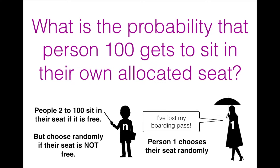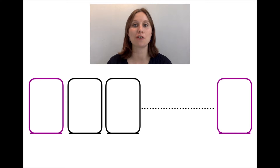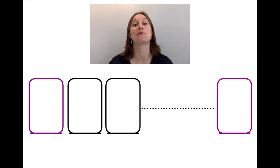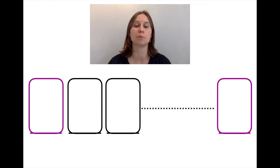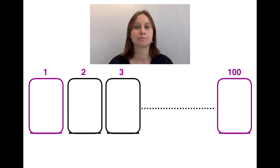In order to explore this problem, we're going to have a look at a few possible different outcomes. I've drawn an aeroplane below — obviously those are aeroplane windows. Behind every window is a seat. I've coloured window one and 100 purple because it turns out they're quite important. And I'm going to assume that person one is allocated seat one and so on.